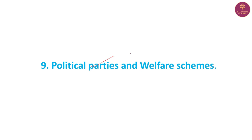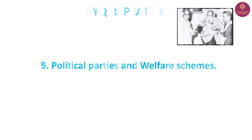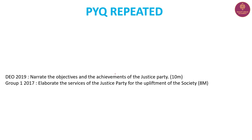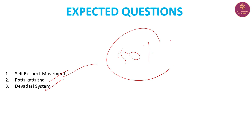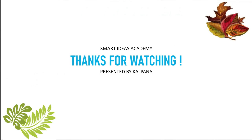The next topic is Political Parties and Welfare Schemes. Here is the Justice Party — we started covering these parties. For expected questions, there is the Self-Respect Movement. This includes welfare systems like the Devadasi system. We will cover about 50% of these parties. So let's note these as useful comments. We will upload this quickly. If you are interested in Group 1, please tell us in the comments. Thank you.